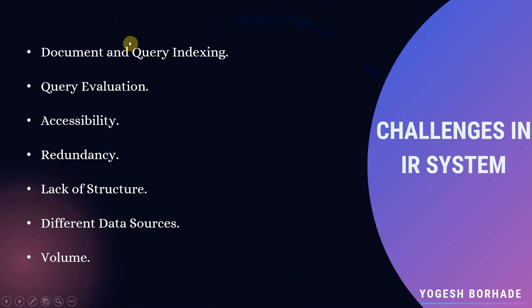The challenges in an IR system are: first, document and query indexing — indexing is important because it helps retrieve information in a short time, and it must be done correctly. Second, query evaluation — whatever query is entered by the user should be correctly evaluated to give relevant output. Third, accessibility — documents the user is searching for should be easily accessible. Fourth, redundancy — duplicate documents or duplicate information should not be displayed; only the most relevant documents should be visible.